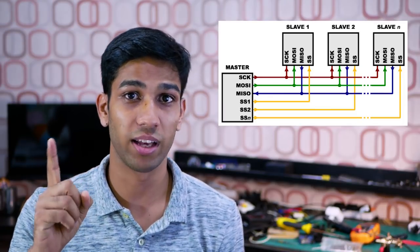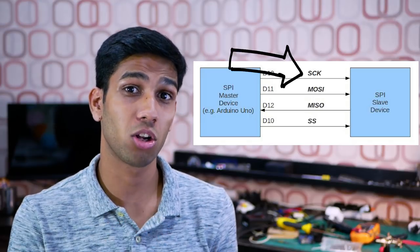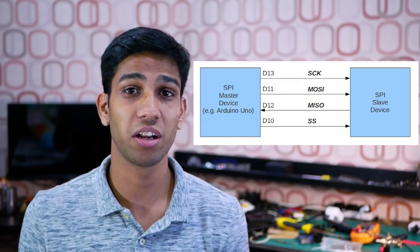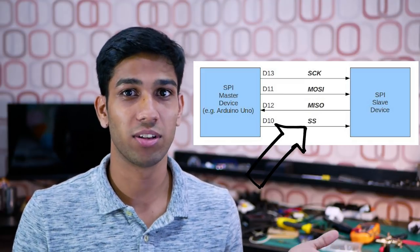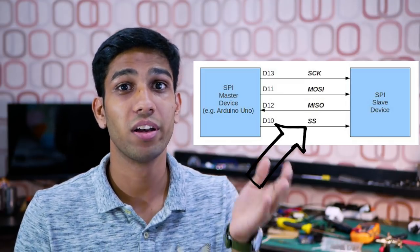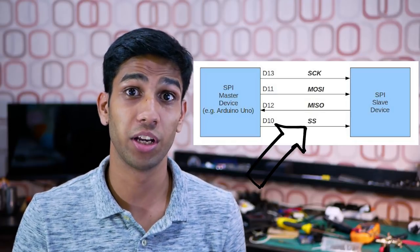Unlike I2C however, SPI only supports one master. SPI also uses separate clock and data lines to facilitate communication, and it also has a slave select line for the device like a microcontroller to decide which slave or peripheral it wants to communicate with.